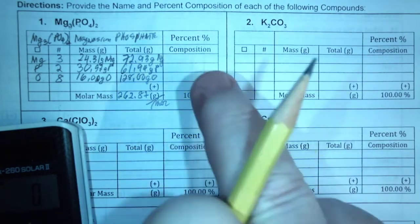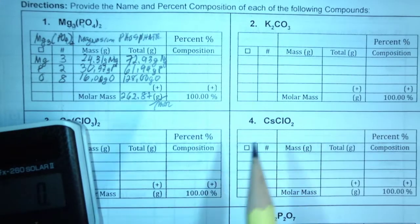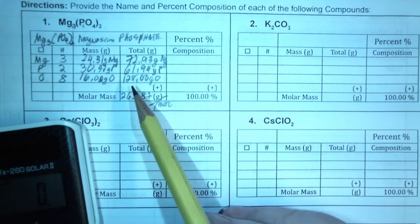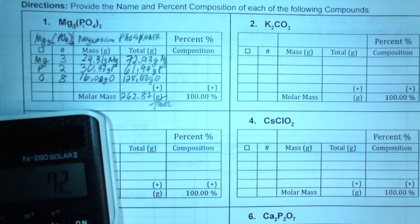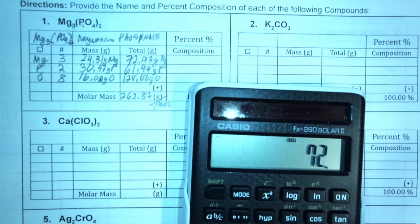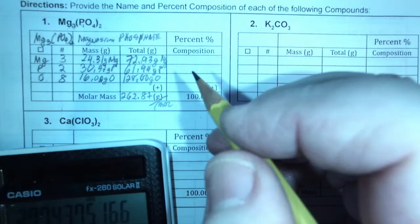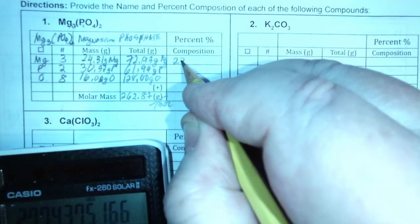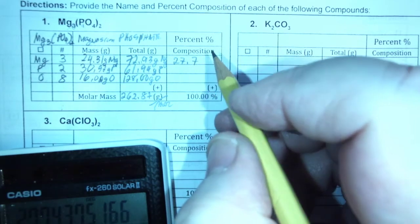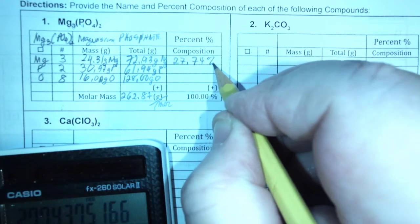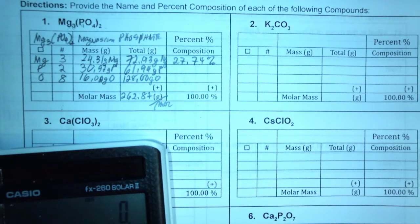Okay. So now you're going to divide. So this one divided by the total. So 72 point... I'm going to try to put it here so you can see what I'm doing. Divided by the total. 262.7 equals times 100. Don't forget the times 100. Okay. So 27.74. Again, two decimal places is good for percent. Keep it consistent.